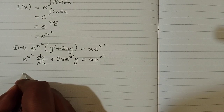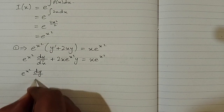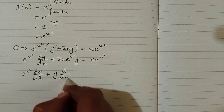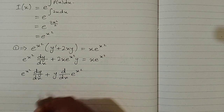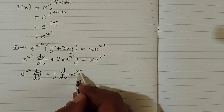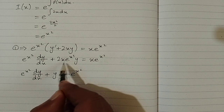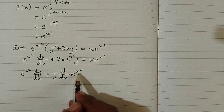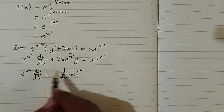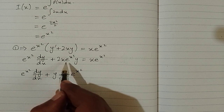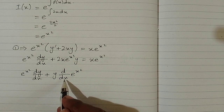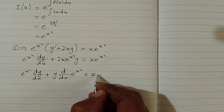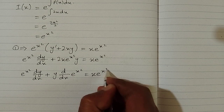Now the left-hand side becomes e^(x²)·(dy/dx) + y times the derivative of e^(x²). Because the derivative of e^(x²) is e^(x²) multiplied by the derivative of the power x², which is 2x. So 2x·e^(x²) can be written as d/dx of e^(x²), giving us d/dx[e^(x²)] = x·e^(x²) on the right.